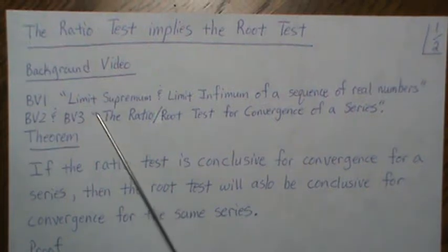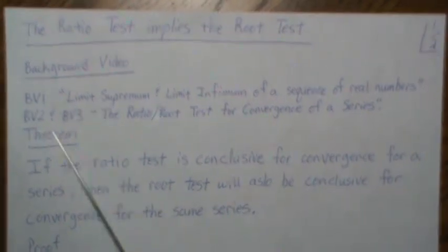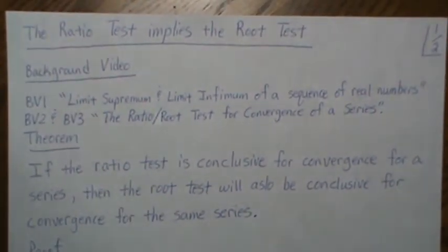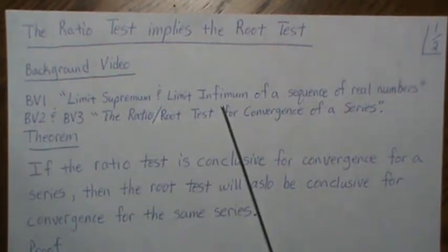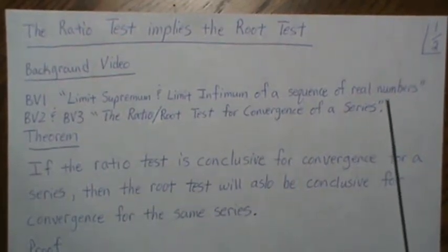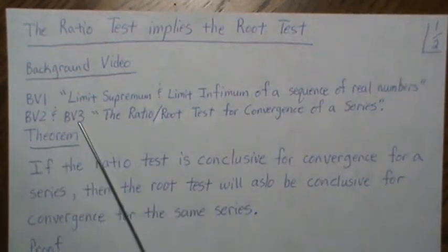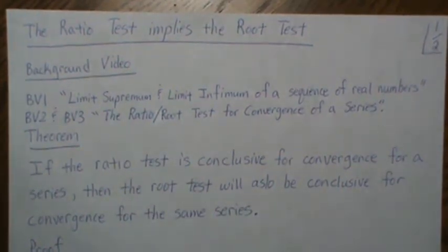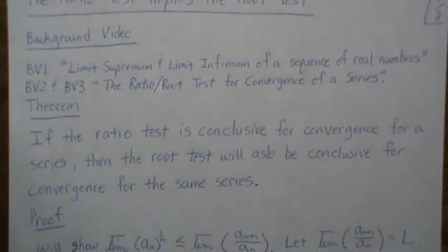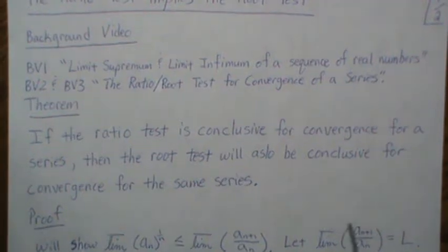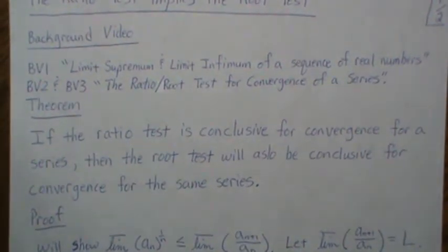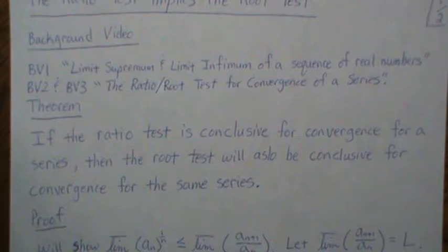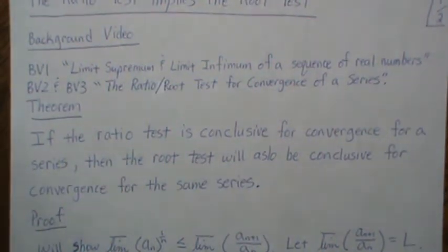I have two or three background videos here — limit supremum, limit infimum — those are good videos. And then the ratio test and the root test for convergence. So the theorem is this: if the ratio test is conclusive for convergence for a series, then the root test will also be conclusive for convergence for the same series.